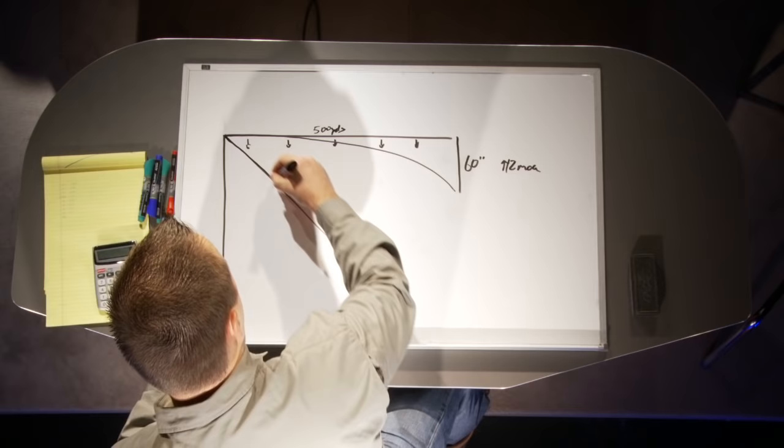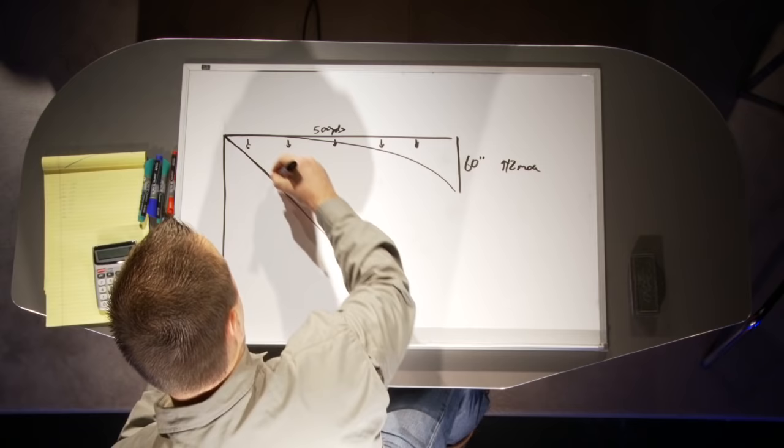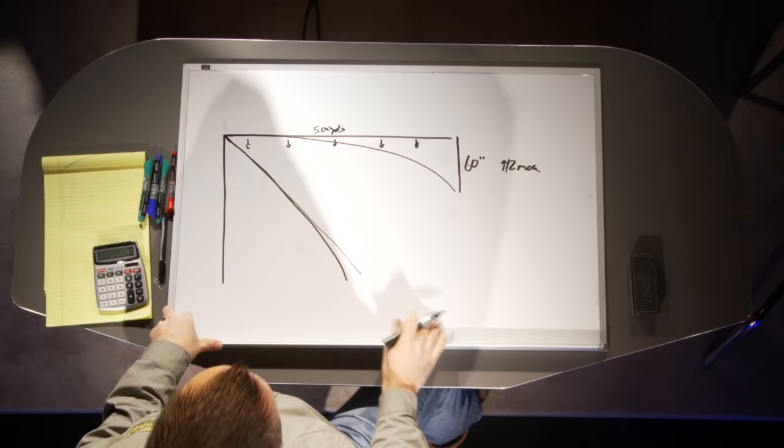If I do an angle here in the middle, the bullet's going to fall more than shooting straight down, but not quite as much as shooting horizontally — it's going to be right in the middle. The bullet's going to fall away from the path, but just not as much, because now the straight down direction is pulling along the flight of the bullet and it goes with the bullet.